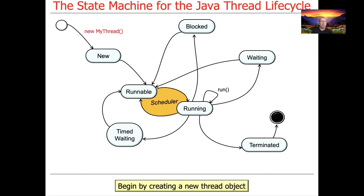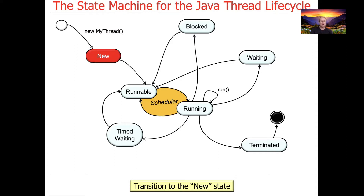Threads begin when you make a new thread. So let's say you've made your own thread class called myThread that is going to extend thread, and then someone comes along and says new myThread. What happens in that case is the thread then transitions to the new state. Not much interesting is going on at that point, but we're in the new state.